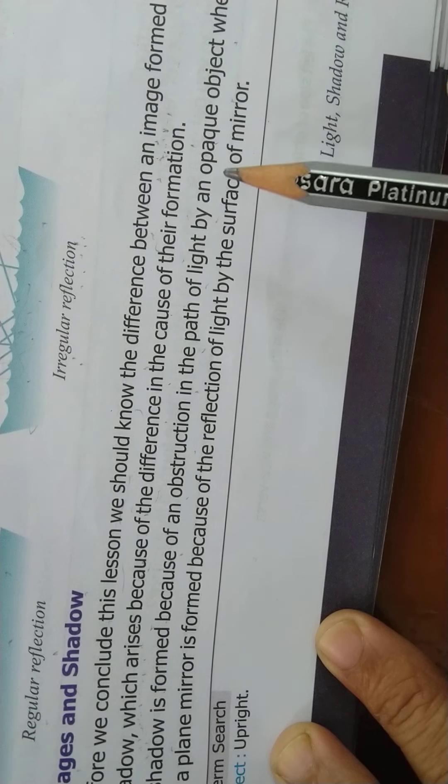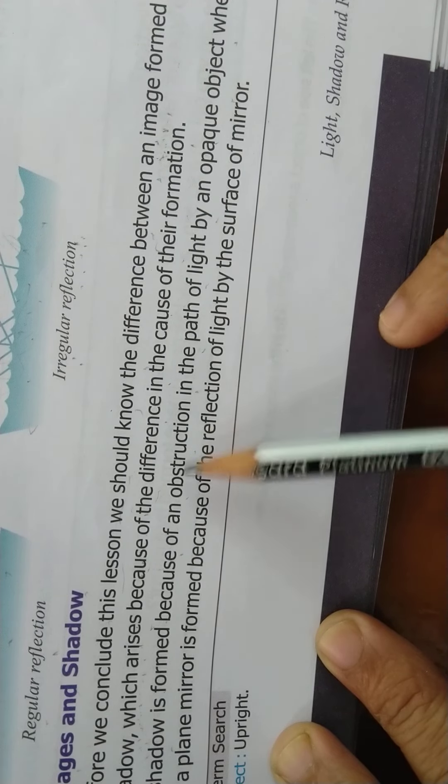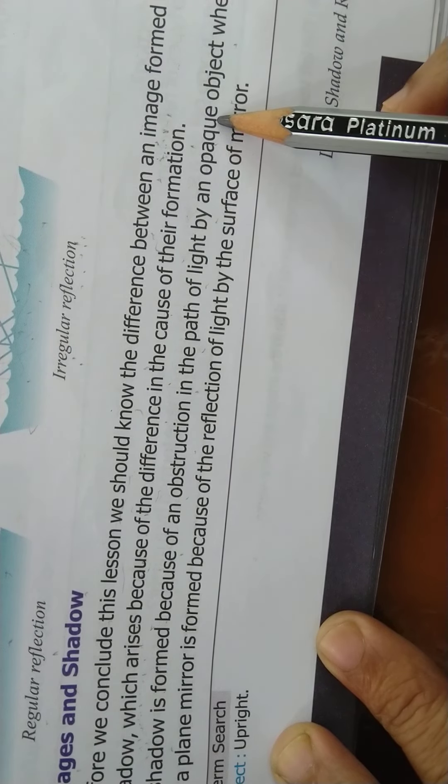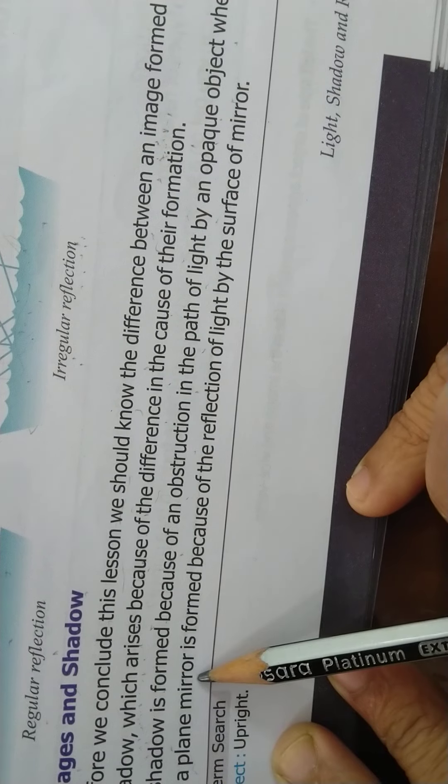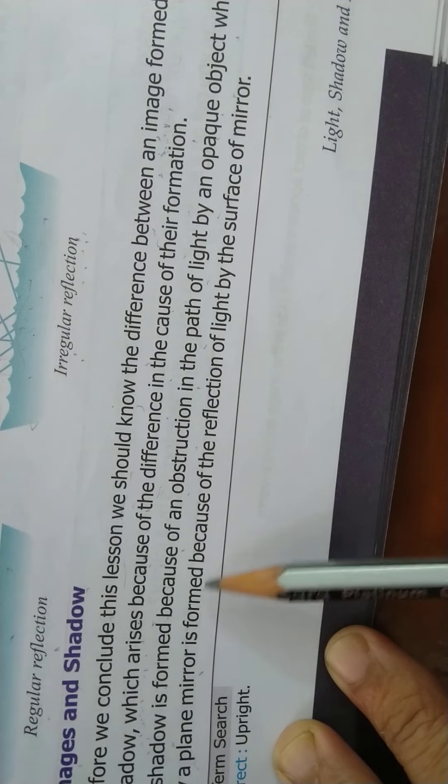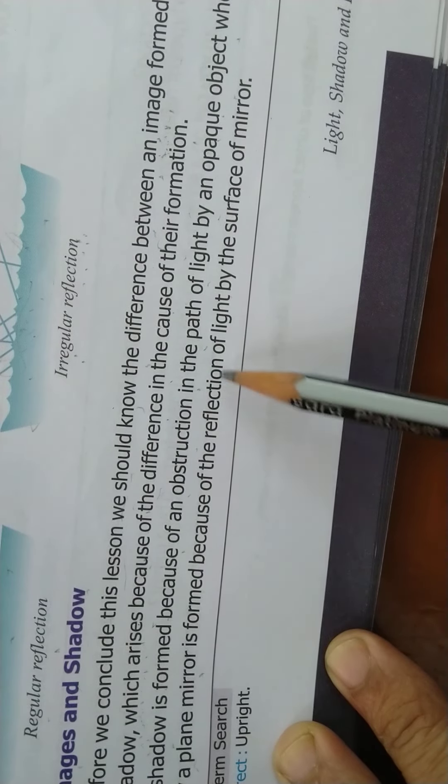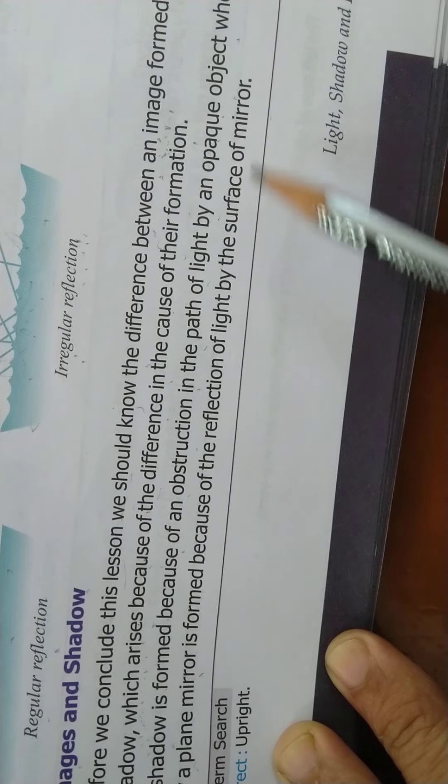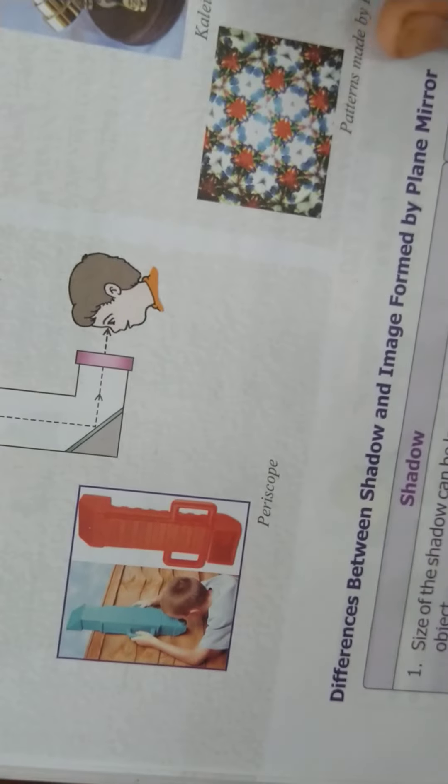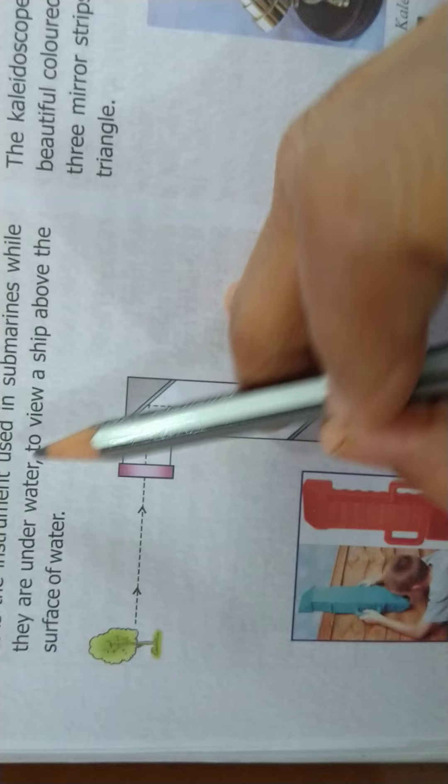Jab light siddhe a rahi hoti hai kahi se, agar us raastte mein koi opaque object aa jata hai, tab phir shadow form hota hai. And image ka form hoti hai jab light ka reflection hota hai surface of mirror pe, tab ja ke hume image form hoti hai. This you can see when you see in front of a mirror, how image is formed.